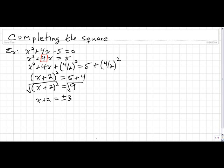And that leaves us with x equals 3 - 2, or x equals -3 - 2. So we get x = 1 or x = -5.